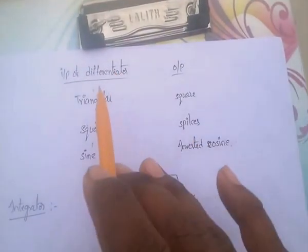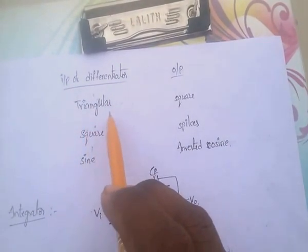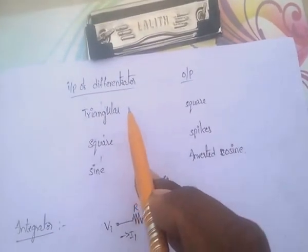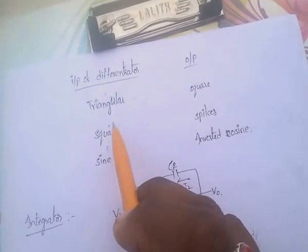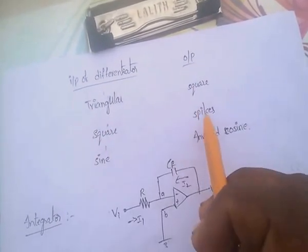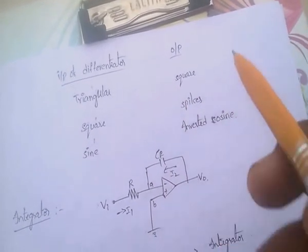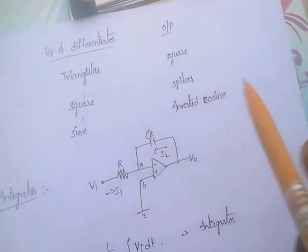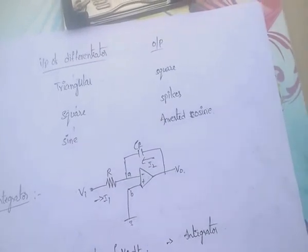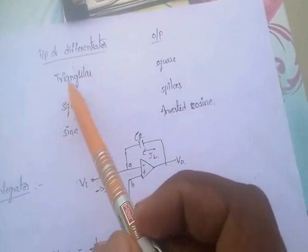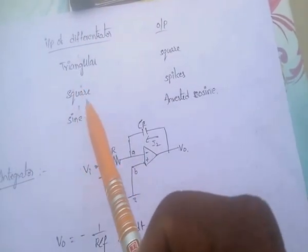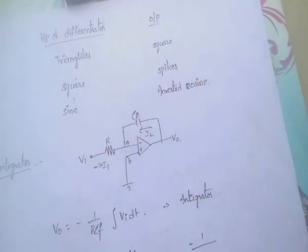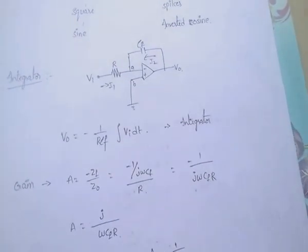Very important table: if the input of differentiator is triangular, then output is square wave. If the input of the differentiator is square wave, the output is spikes. If the input of the differentiator is sine wave, the output is inverted cosine.